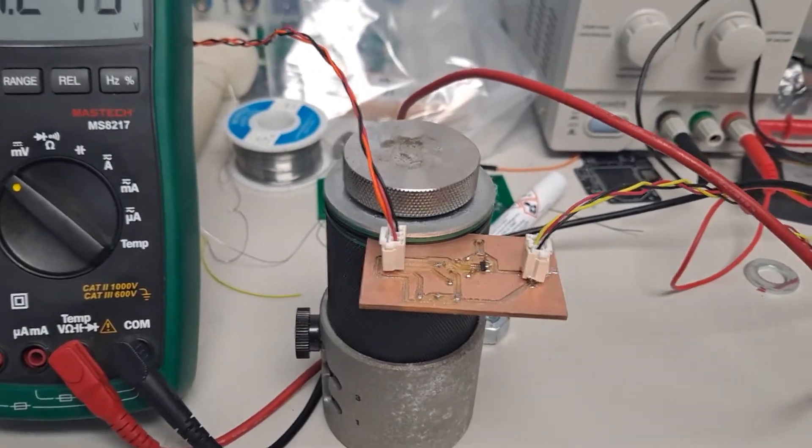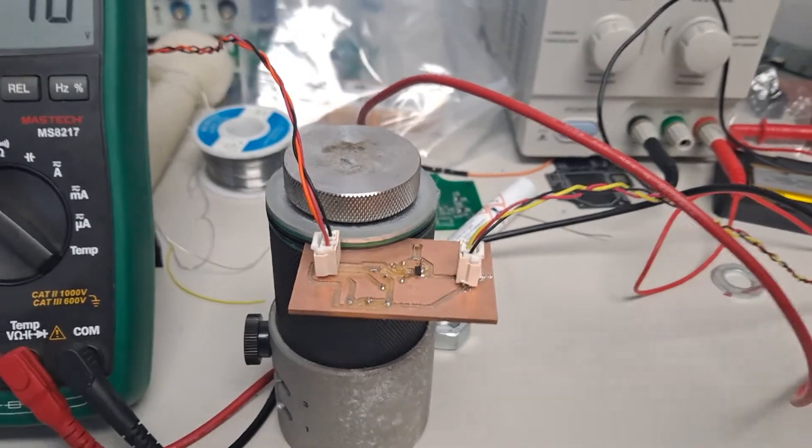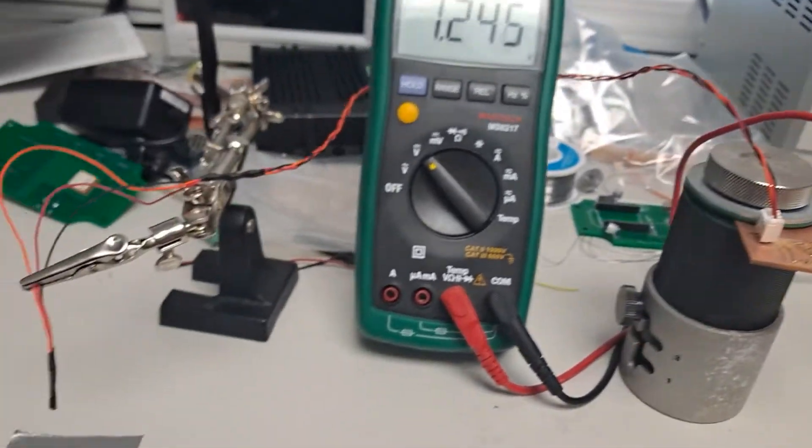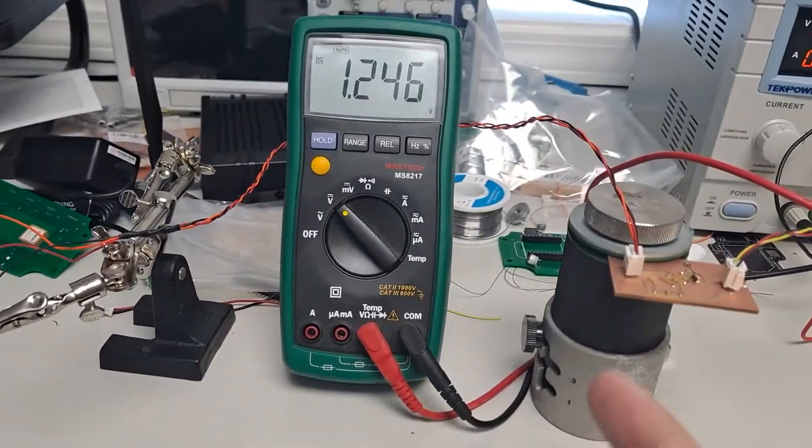We've got 10k going into the non-inverting input, and then 100k on the feedback, so we've got a 10 times multiplier, and then we're amplifying the Hall effect output and measuring it.